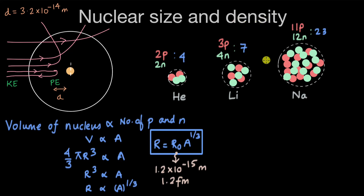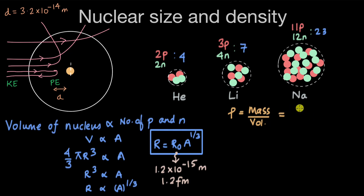We can also think about the density: if we add more protons and neutrons, does it make the nucleus more dense, or does it not affect the density? Density ρ equals mass divided by volume. For the helium atom, the mass equals the mass of all the nucleons. For any general nucleus, mass equals the number of nucleons A multiplied by the mass each carries, which is approximately one atomic mass unit (1 amu).